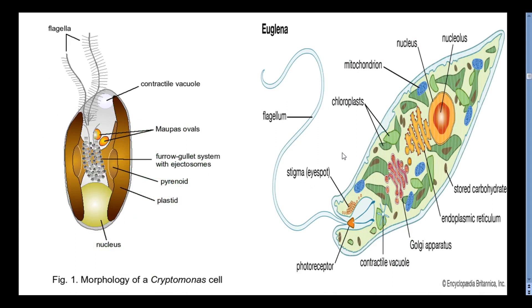This is a Cryptomonas cell having a Contractile Vacuole with a Pyrenoid and Plastids, along with a Nucleus and Flagella. These flagella are called Tinsel type, because there are hair-like structures attached to them. The Whiplash type of flagella has no hair-like structures. The Euglena structure shows an eye-spot or Stigma with a Photoreceptor, below which are a Contractile Vacuole, Golgi Apparatus, Chloroplast, Endoplasmic Reticulum, Mitochondria, Nucleus with Nucleolus, and stored carbohydrates as food granules.